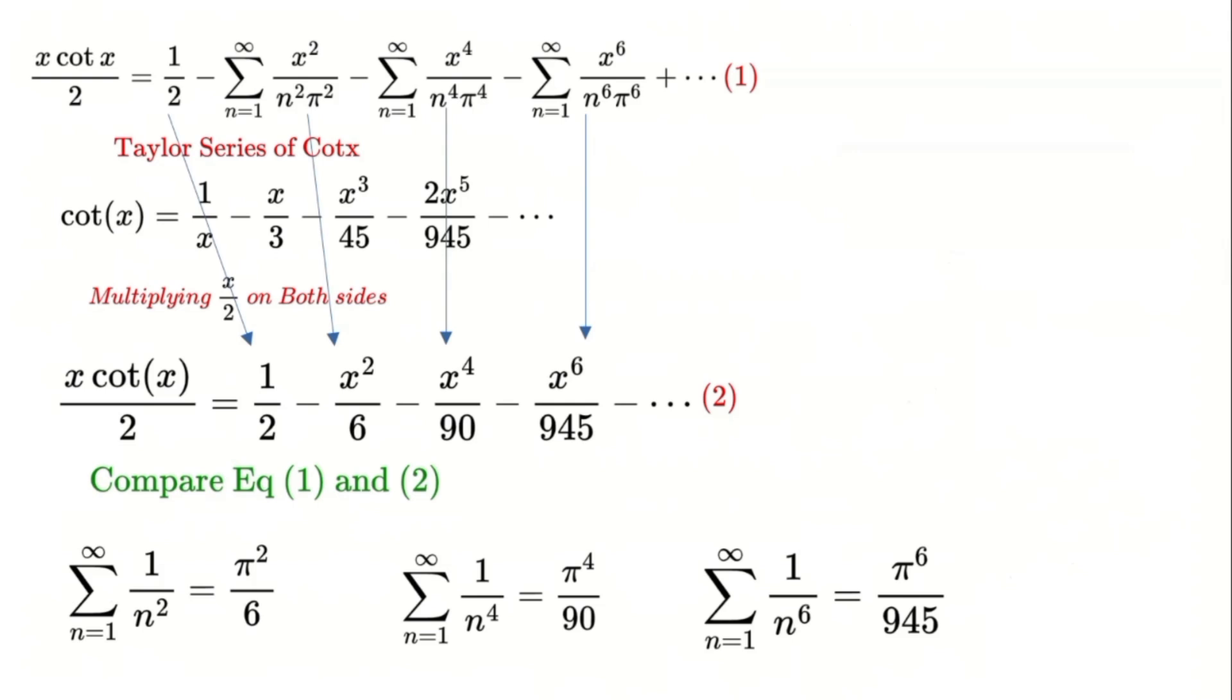Similarly, the zeta of 4 equals pi to the power of 4 divided by 90, and so on. It's like unlocking a treasure chest of mathematical truths.